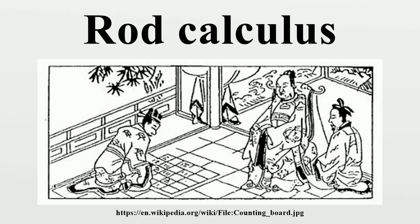The key software required for rod calculus was a simple 45-phrase positional decimal multiplication table used in China since antiquity, called the 9-9 table, which was learned by heart by pupils, merchants, government officials, and mathematicians alike.